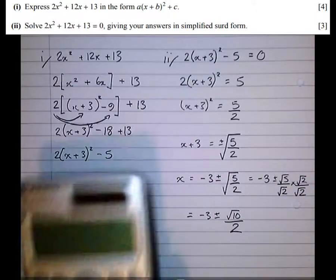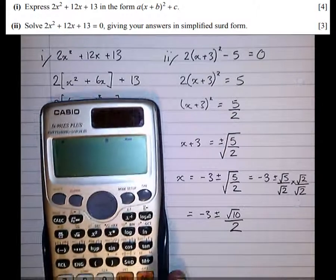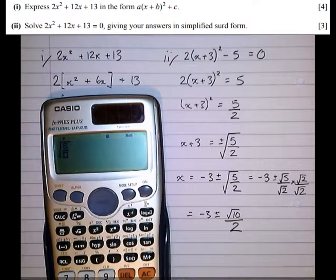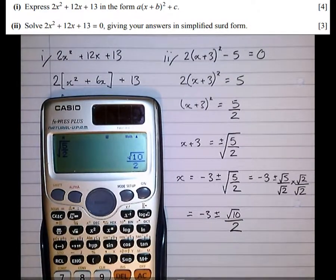Alternatively, what we could have done to rationalize the denominator was simply type it into our calculator. So type in root fraction 5 over 2, press equals to get √10/2, just like in the answer.